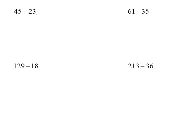Starting with this first subtraction, I have 45 subtract 23. I'm going to partition the second number. The 2 I will recognize as 20 because it is in the tens column, and the 3 I'll recognize as 3 digits.